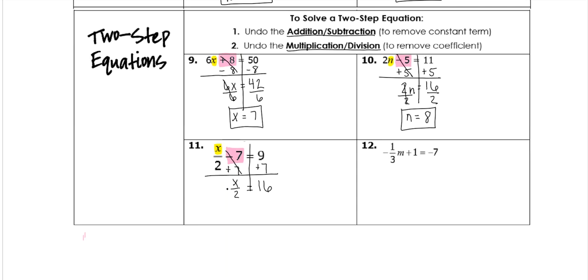Now we have a division that we need to undo. So we're going to multiply by 2 on both sides to get rid of the division. Because this just is basically 2 divided by 2, which is 1, or 1x, which just leaves us x. And then 16 times 2 is 32.